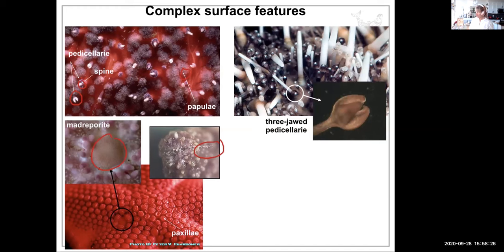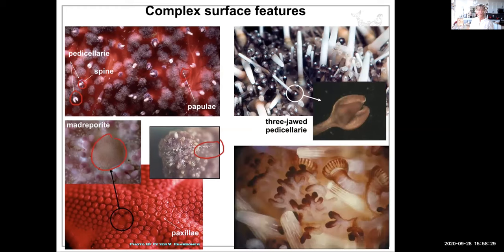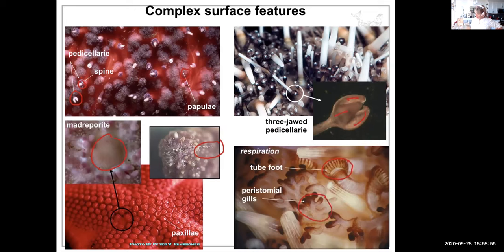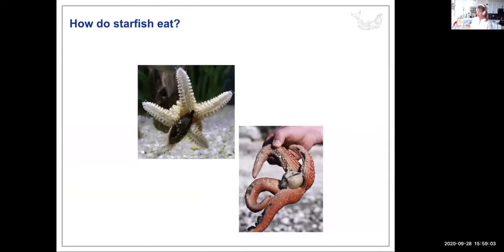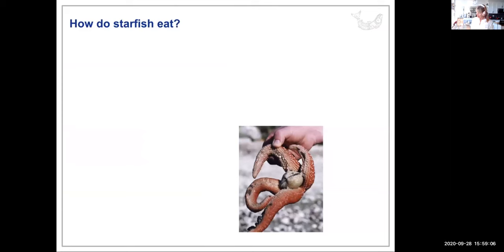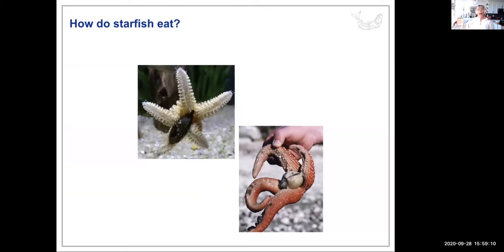These are the three-jawed pedicellariae. They open and close, and they prevent parasites from landing on the sea star, which is often sessile when it's not moving around. Respiration occurs through the tube feet, but also through peristomial gills — skin gills. The surface features of the sea star are one of the most interesting things about them. Sea stars also eat by extruding their stomach: they pry open a shell with their tube feet, extrude their stomach inside, enzymes digest the contents, and then they suck it back into their body.